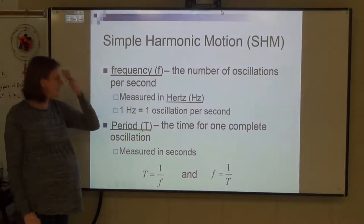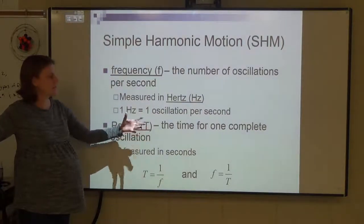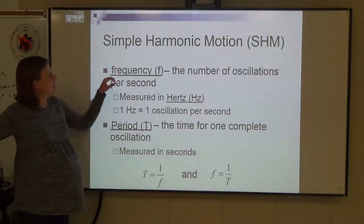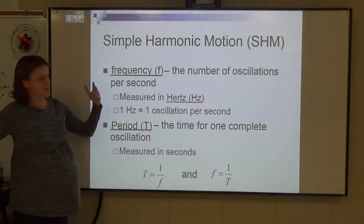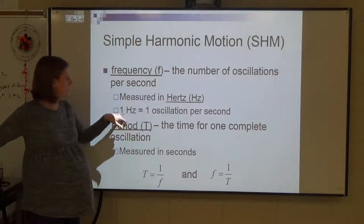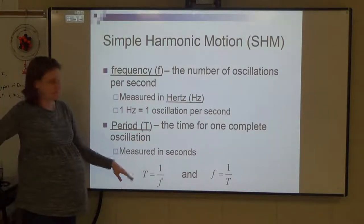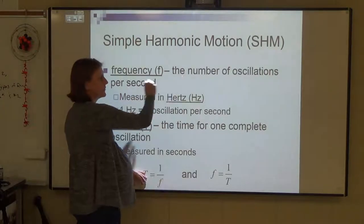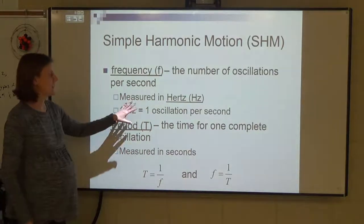A couple of terms related to oscillations: period and frequency. Period is just the time for one complete cycle or one complete oscillation — it's time, measured in seconds. Frequency is the number of oscillations per second, measured in hertz. One hertz is one oscillation in one second. Period and frequency are inversely related — if the period was two seconds, the frequency would be one-half.